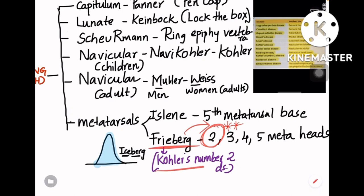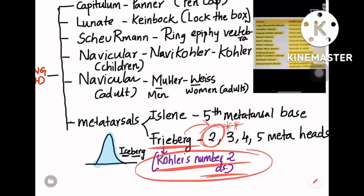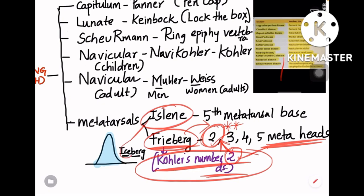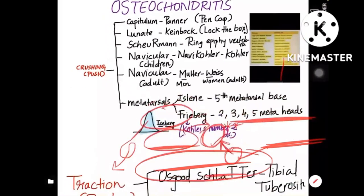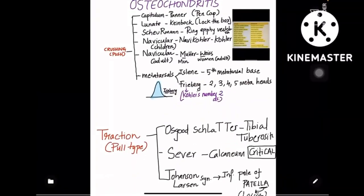Freiberg disease is also called Köhler's number two disease — number two for the second metatarsal head. So Köhler's number two is Freiberg (metatarsal heads), while Iselin is the metatarsal base. That completes the mnemonics for all types of osteochondritis, divided into the crushing type and the traction type.